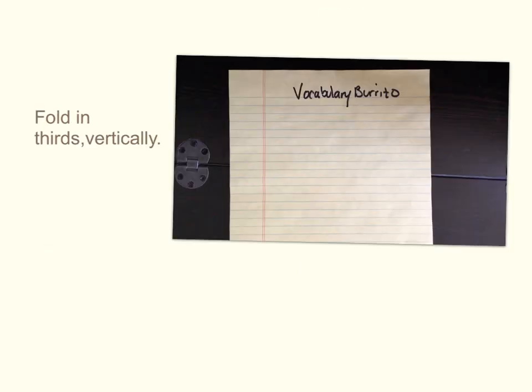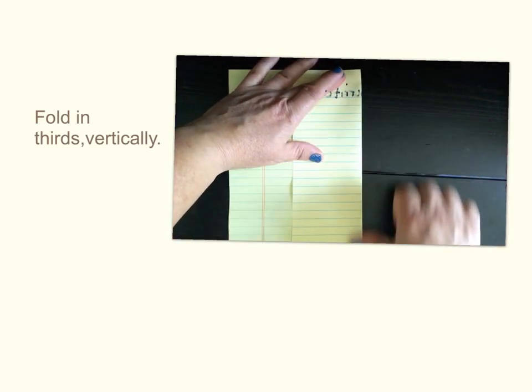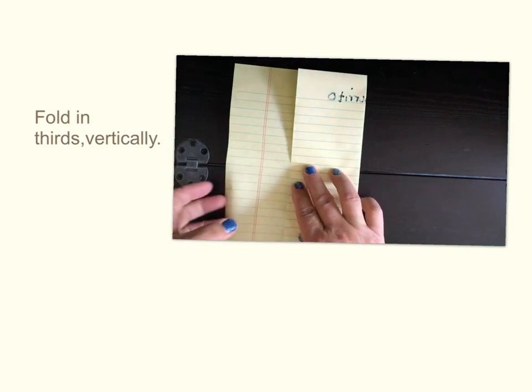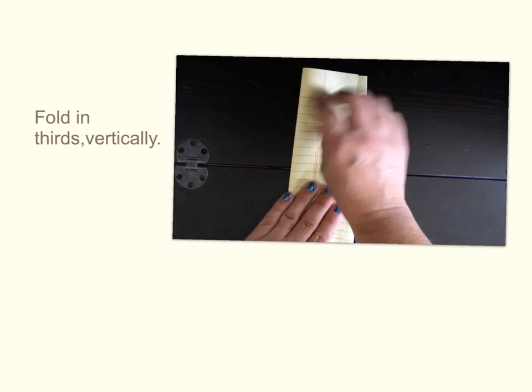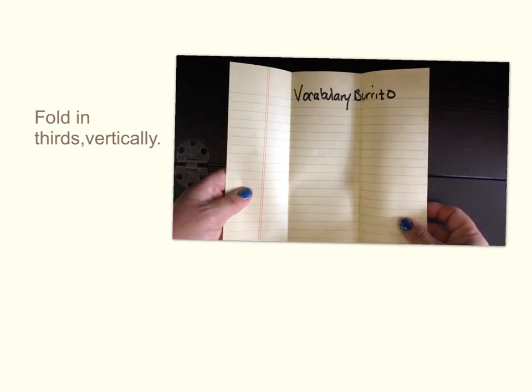Step one is to fold your paper in thirds vertically. Go a little bit past half and fold the other side a little bit past half. When you open it up you will have three columns on each side.